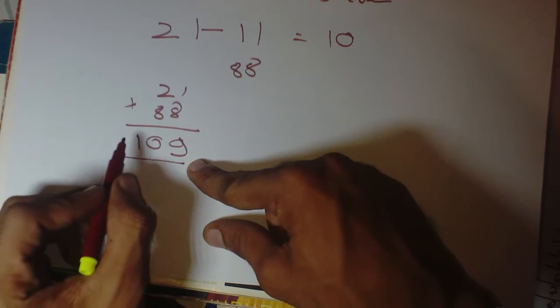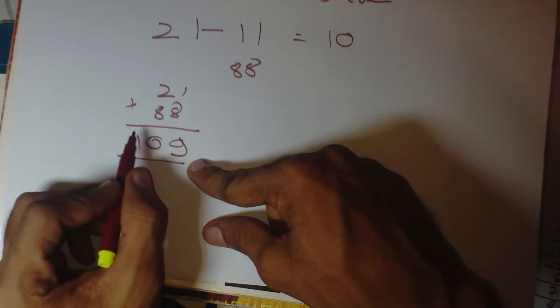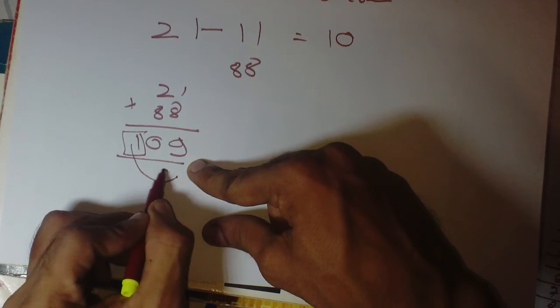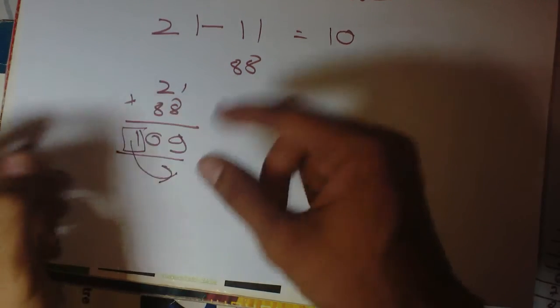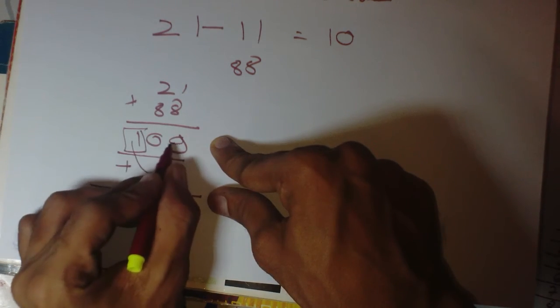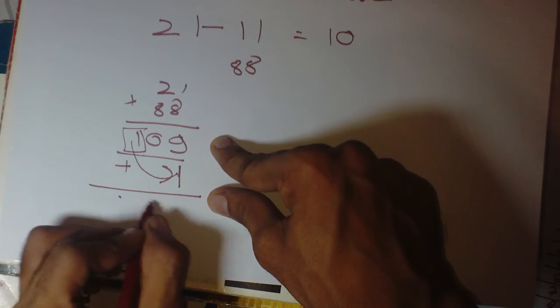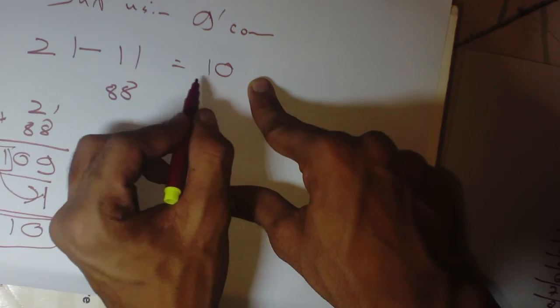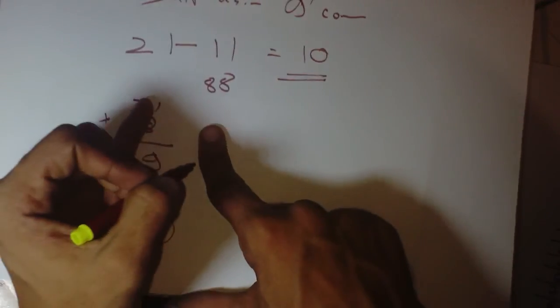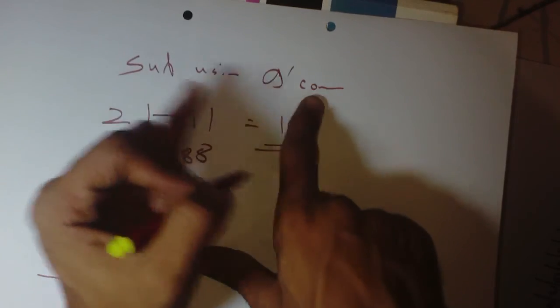Here is my value. Then I have to move this end carry to here in the form of addition. So 9 plus 1 is 10, and we also got the answer: 10. So this is how we perform subtraction using 9's complement.